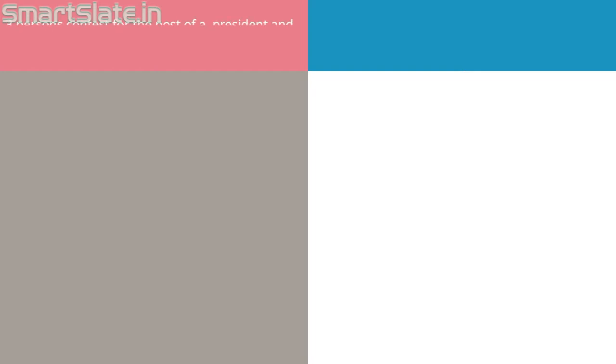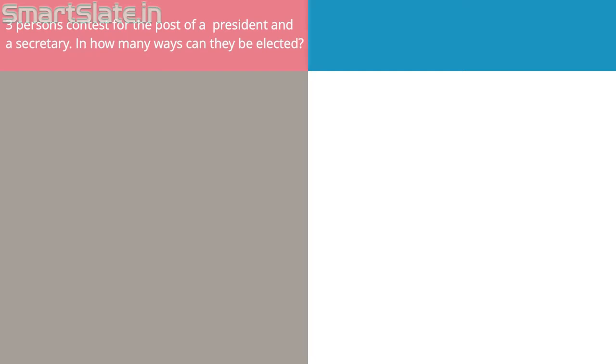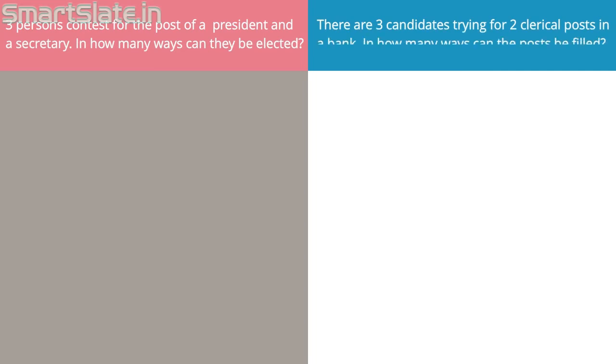Let's begin by studying two kinds of scenarios which involve counting. In the first scenario, three persons contest for the post of a president and a secretary — in how many ways can they be elected? In the second scenario, there are three candidates trying for two clerical posts in a bank — in how many ways can the posts be filled?